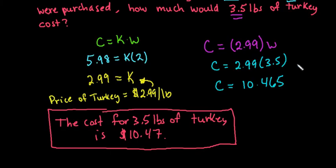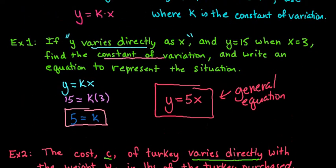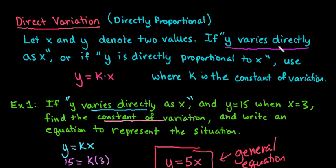So hopefully you know now how to find the direct variation. So remember, anytime it says y varies directly as x or if it says y is directly proportional to x, you're always going to use this equation. As always, thanks for watching. If you have questions, please let me know.